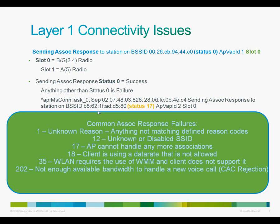Here are some possible reason codes for failed association response. For example, status 17 would indicate there are too many clients connected to an access point. A status of 18 would indicate that the client and the access point do not agree on the supported data rates. For example, if you had an SSID that supported 802.11G rates only, a client that supports only 802.11B will not be able to join that SSID. So take a quick look at all the other possible reason codes here.